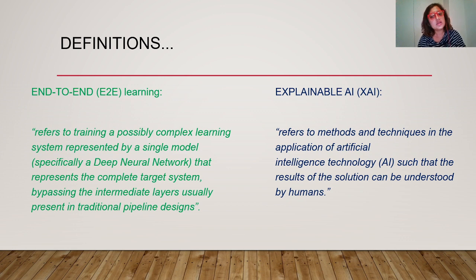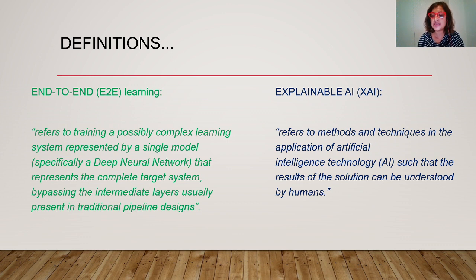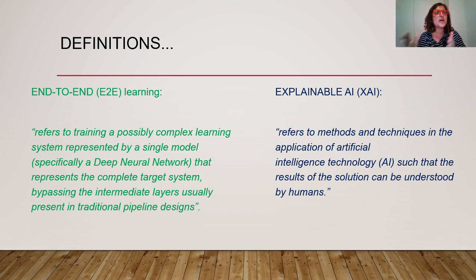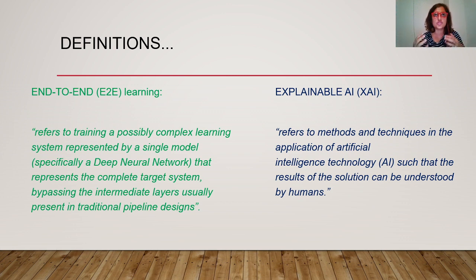An explainable AI system refers to methods and techniques in the application of AI such that the results can be understood by humans. In a typical explainable AI pipeline, you take a set of images, construct features in an explainable way, pass them through a classifier, and get the outcome. For each and every module or stage you design, you know exactly what it is doing, and you can then optimize each sub-module to get the best final outcome.